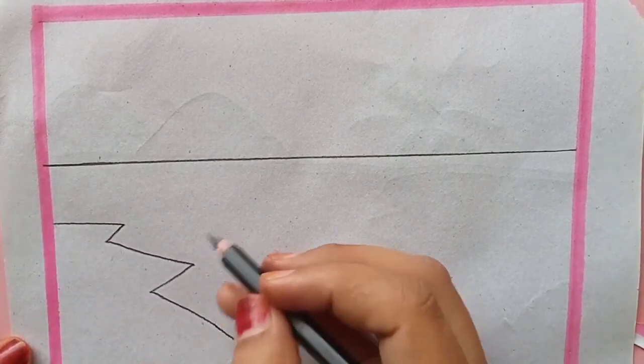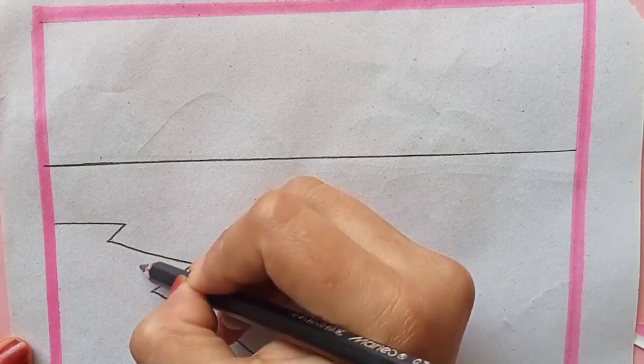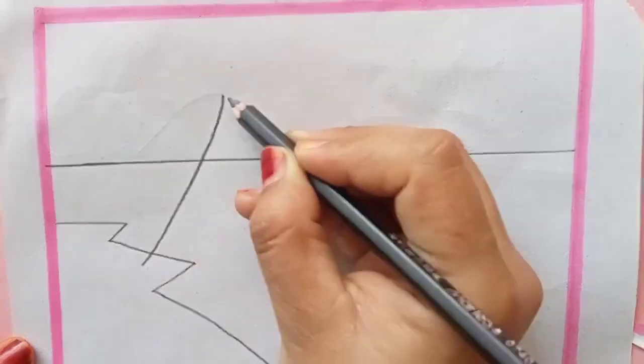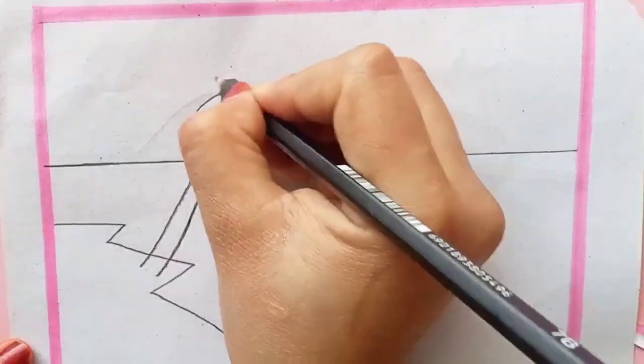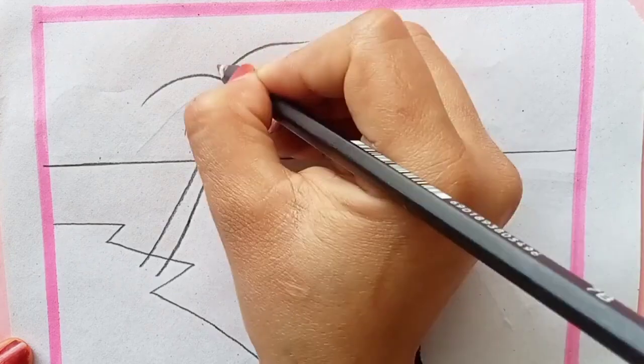First of all, I'm using here a 6H pencil. You can use any pencil. By using a scale, I have drawn a straight line, and on the side I am drawing the brink of the river. On that brink, I am drawing a coconut tree just like this.